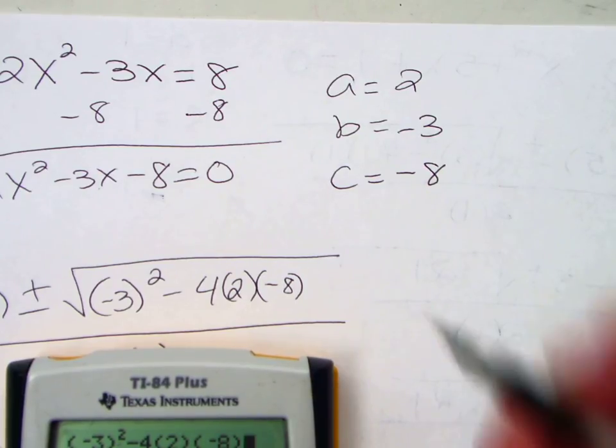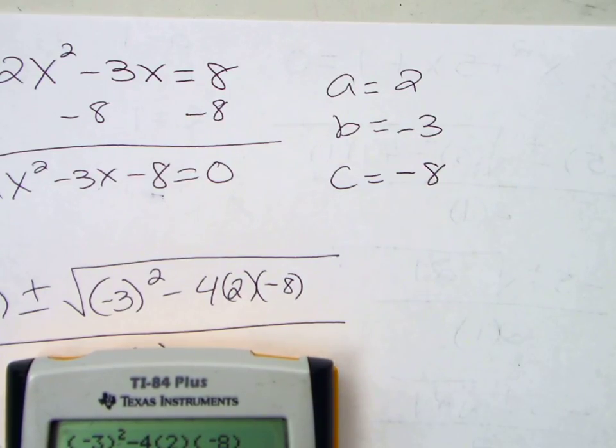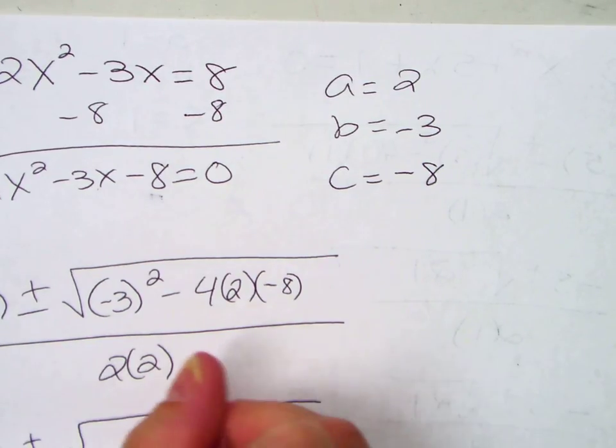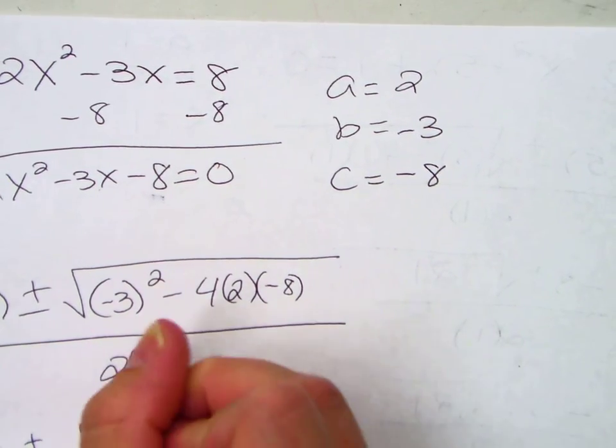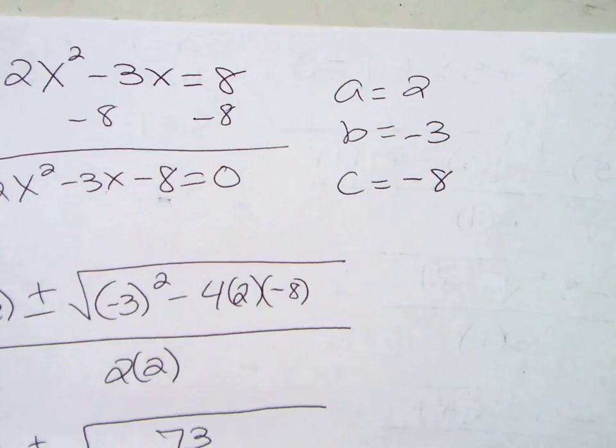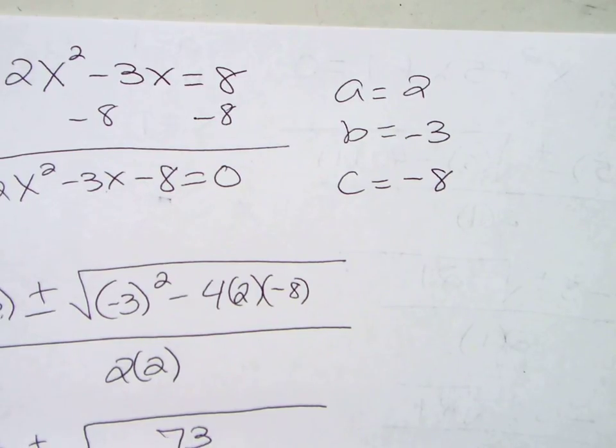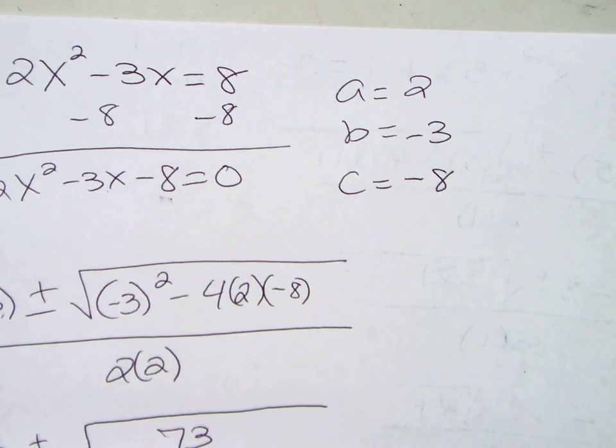Negative 3 squared minus 4 times 2 times negative 8. Look, it's exactly what I wrote here. No radical though. 73. The square root of 73 all over 2 times 2 is 4. This is like that last one.